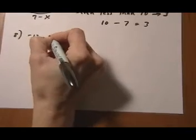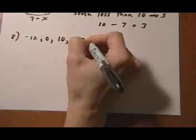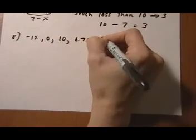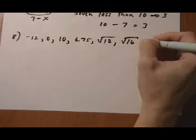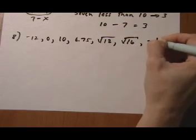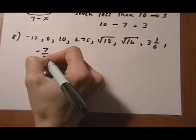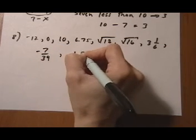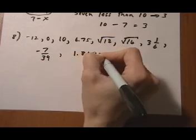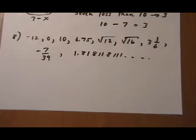So we have minus 12, 0, 10, 6.75, root 12, root 16, 3 and 1 sixth, minus 7 over 39, and 1.81811 and it keeps going.